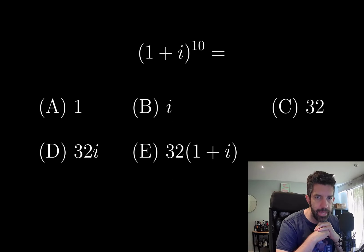(1+i)^10 is equal to: (A) 1, (B) i, (C) 32, (D) 32i, or (E) 32(1+i).